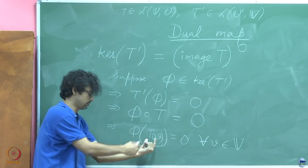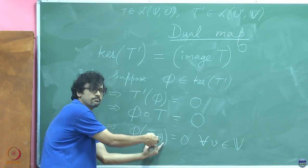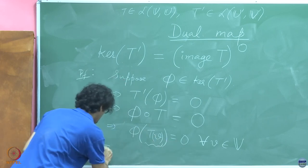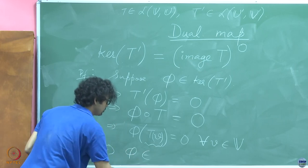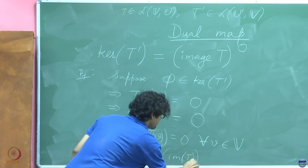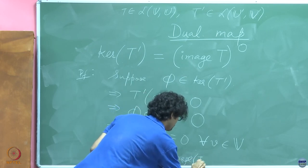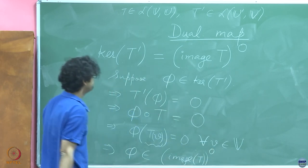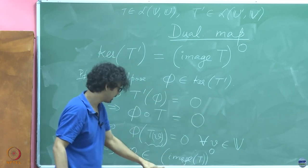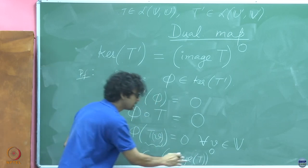So whenever φ acts on any fellow in the image of T, it totally annihilates it. If you can choose any fellow in the image of T, any fellow in the image of T gets pulverized or annihilated by φ. So therefore, φ belongs to image T's annihilator. So I started with something in the kernel of T prime and I ended up showing that it must belong to the annihilator of the image of T. So one-sided inclusion is done.